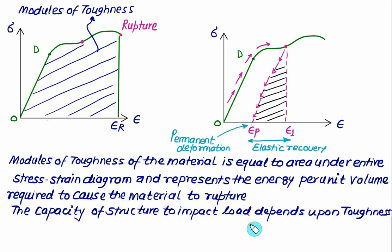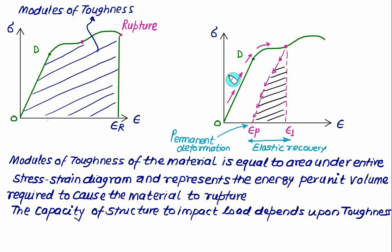The toughness of a material relates to its ductility as well as its ultimate strength. The capacity of a structure to absorb impact load depends on toughness. The modulus of toughness equals the area under the entire stress-strain diagram and represents the energy per unit volume required to cause rupture.